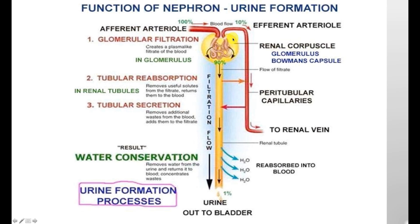The afferent arteriole brings blood to the glomerular capillary. The glomerular capillary bed is semi-permeable to certain solutes and materials. Whatever gets through goes into the renal tubules. This is where tubular reabsorption occurs — we reabsorb useful things like water and solutes such as sodium and glucose, which return via the peritubular capillary back into circulation. The peritubular capillaries also secrete additional waste, maximizing waste excretion and concentrating it.